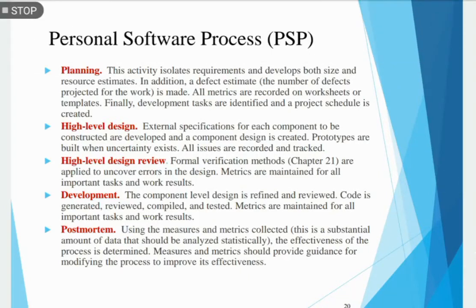We will start with the next point of chapter number two of software engineering, that is personal and the team process model. In this, first of all we will see personal software process, also called PSP. Every developer uses some process to build computer software. The process may be haphazard or ad hoc, may change on a daily basis, may not be efficient, effective, or even successful, but a process does exist.